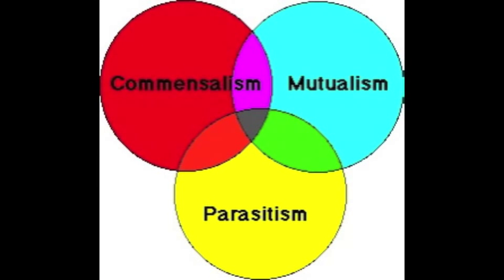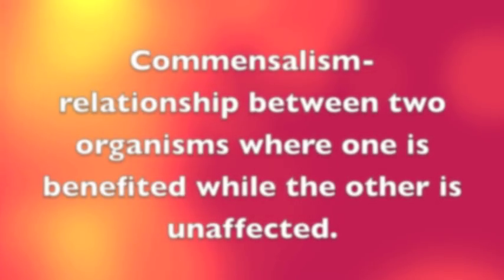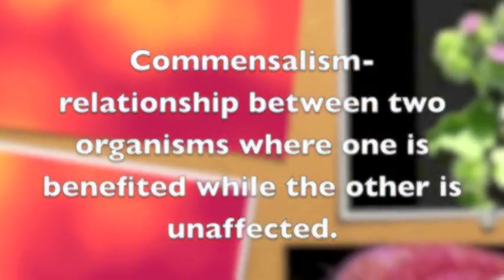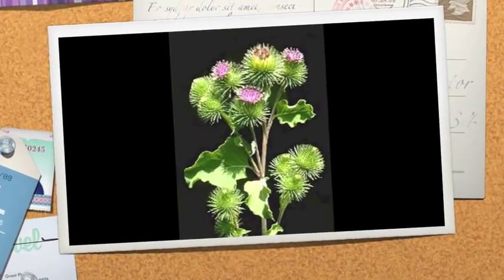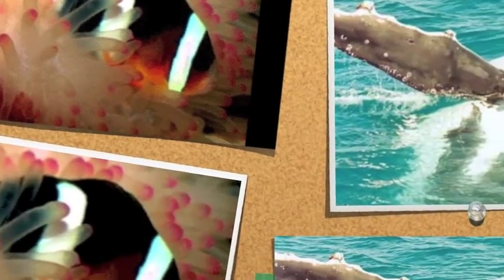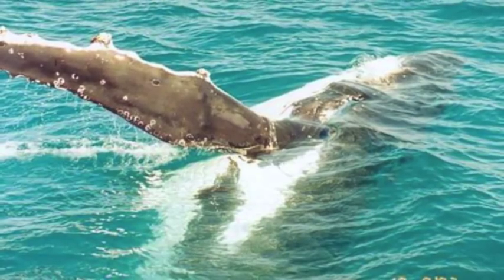These three types will consist of commensalism, mutualism, and parasitism. Commensalism is a relationship between two organisms where one is benefited while the other is unaffected. One example you may recognize is a clownfish and a sea anemone. The clownfish is immune to the stings of the sea anemone and is protected by it, while the sea anemone is unaffected by the clownfish.